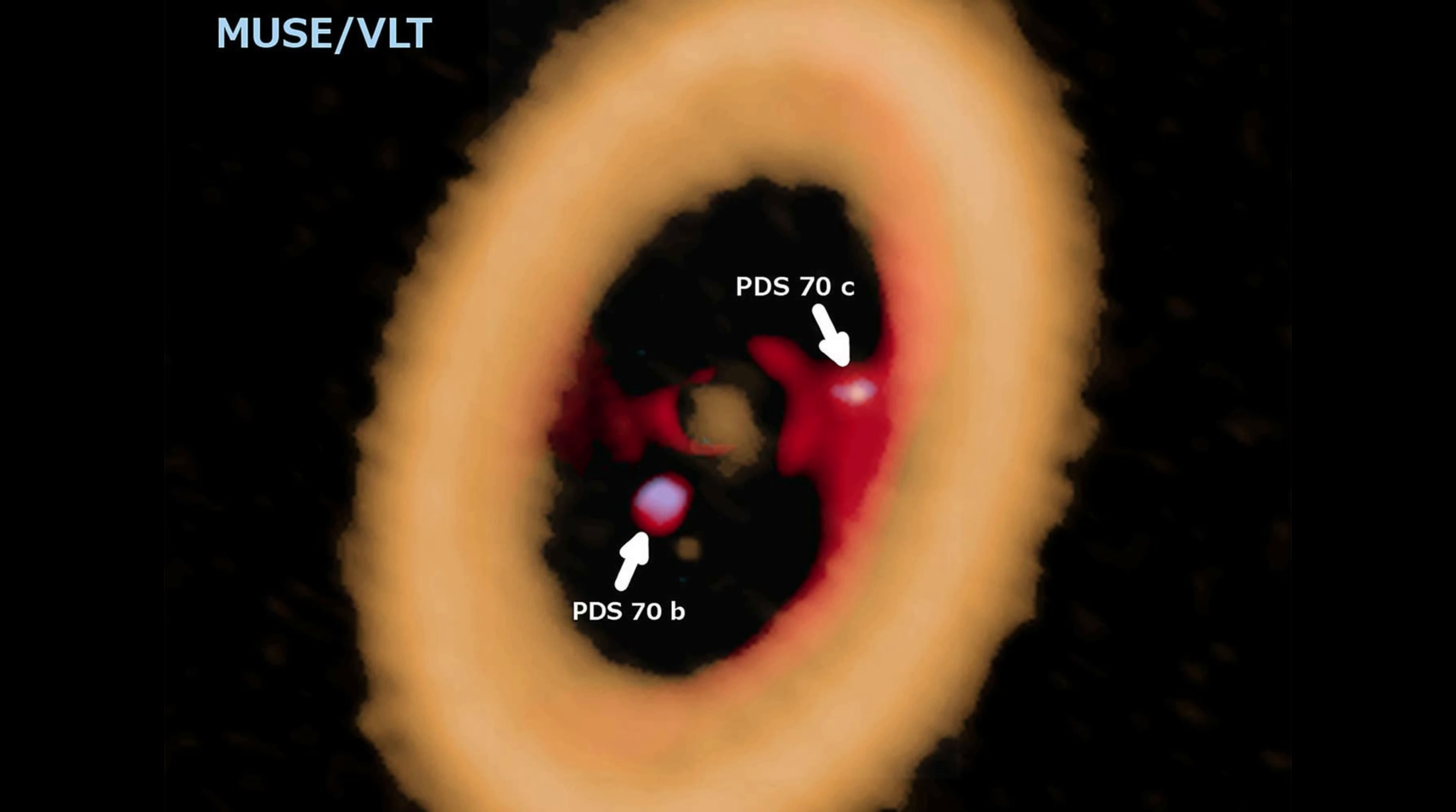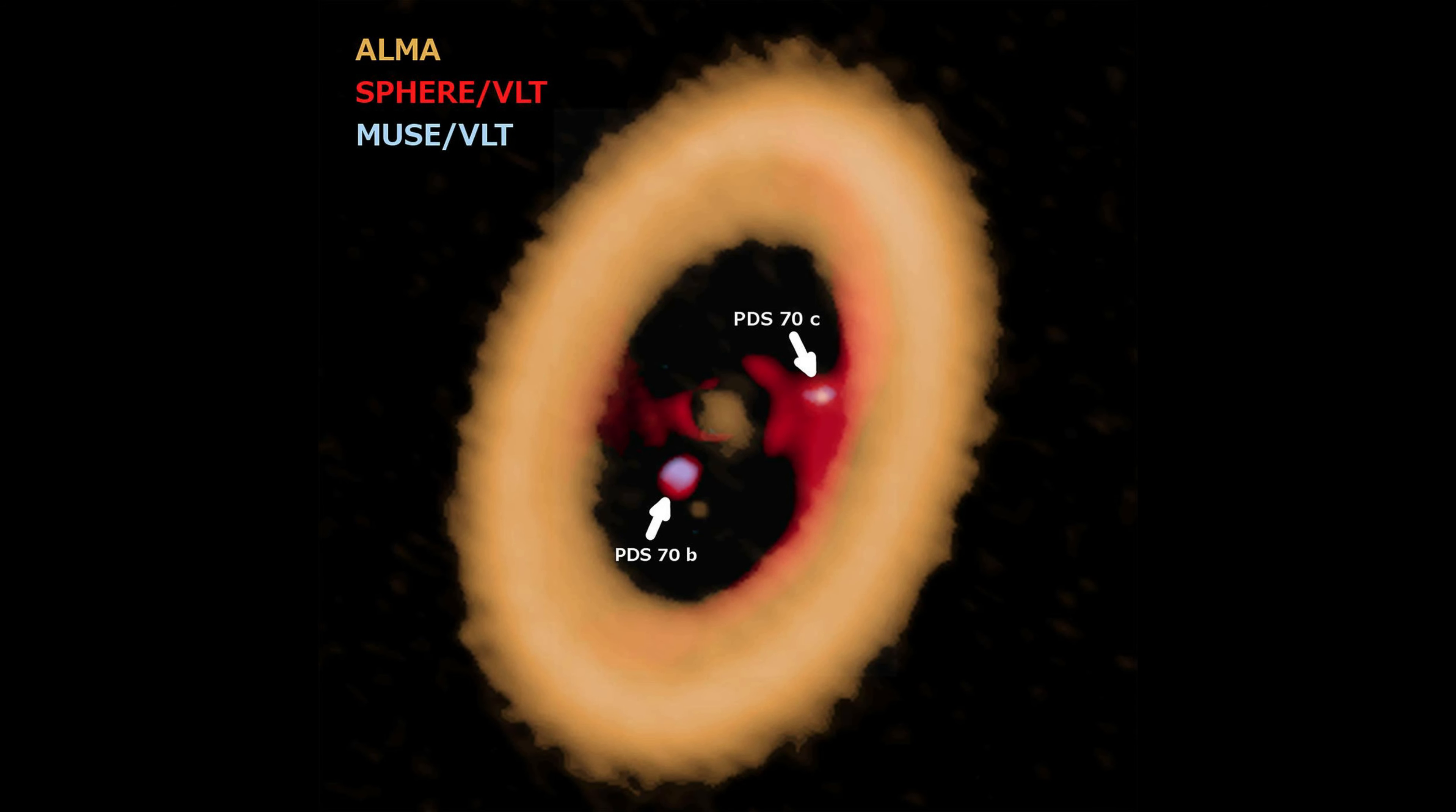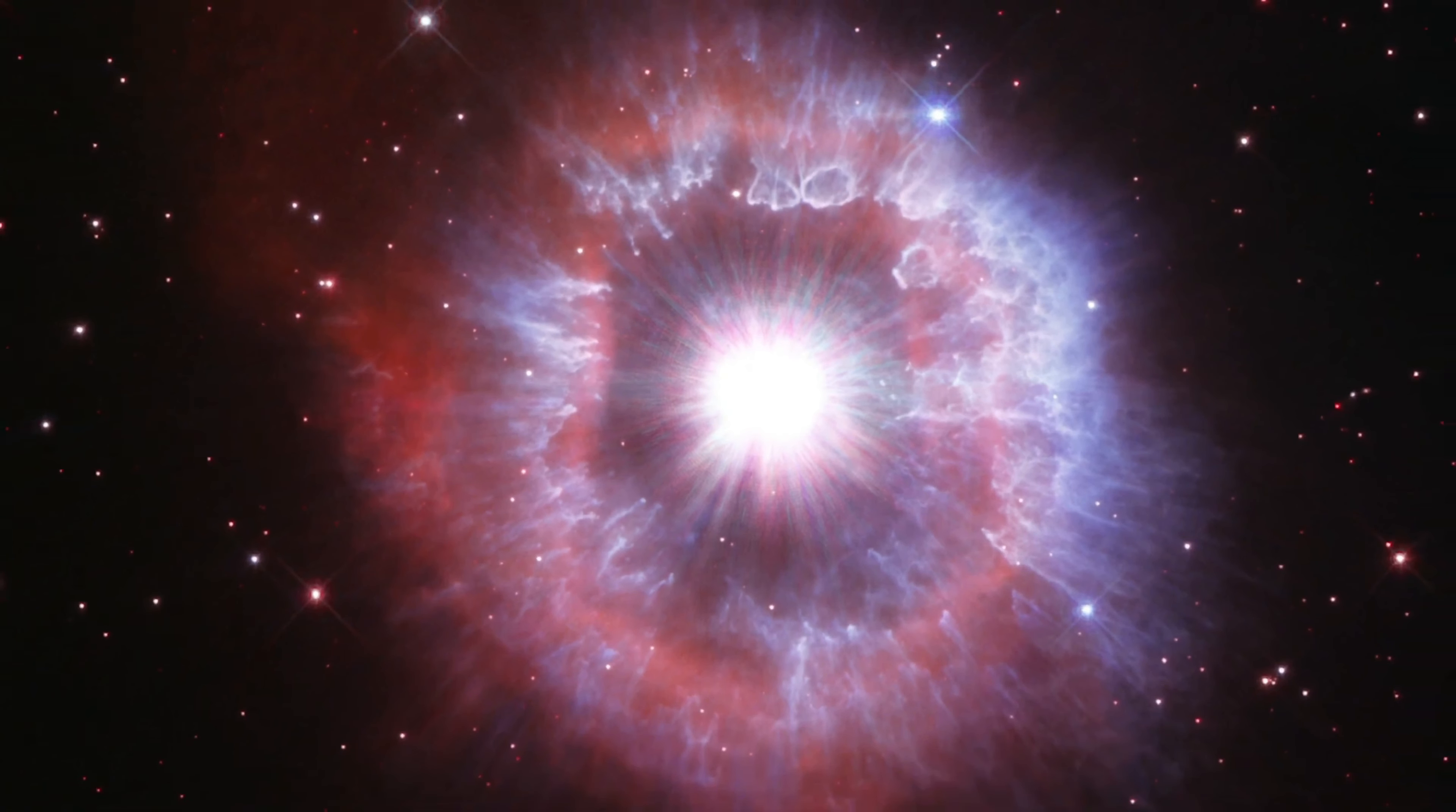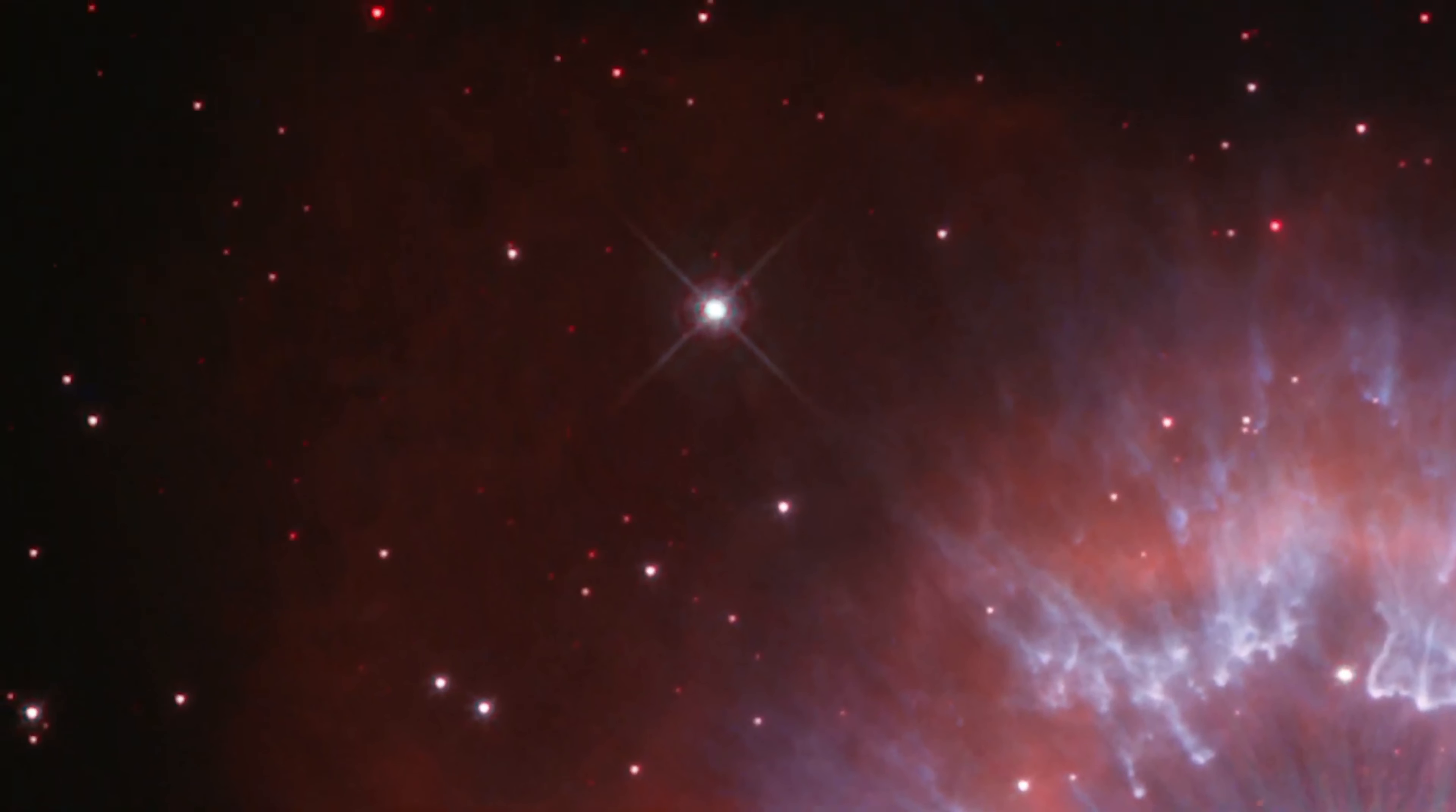The planet PDS-70b is encircled by its own gas and dust disk that siphons material from the vastly larger circumstellar disk in this solar system. The researchers hypothesize that magnetic field lines extend from its circumplanetary disk down to the exoplanet's atmosphere and are funneling material onto the planet's surface.